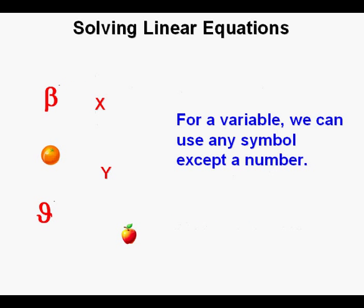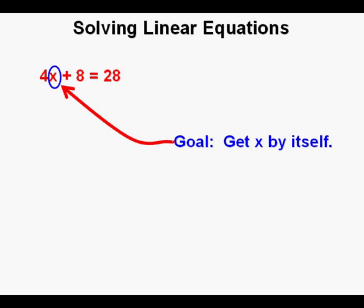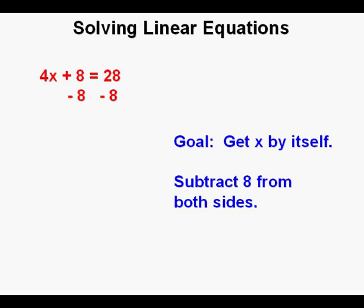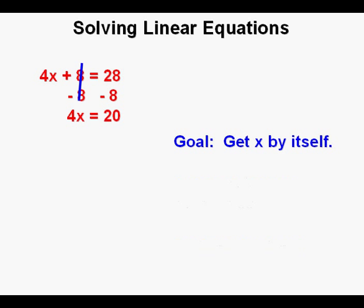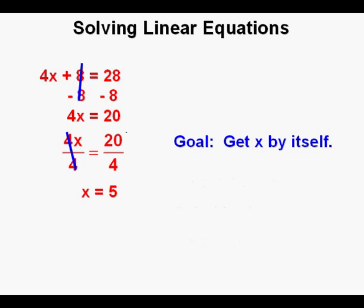We have different kinds of symbols and letters. For a variable, we can use any symbol except a number. Let's solve this equation: 4x plus 8 equals 28. The goal, again, is to get x by itself. We'll start by subtracting 8 from both sides of the equation. 8 minus 8 cancel on the left side. We bring down what's left: 4x equals 20. Divide both sides of the equation by 4. 4 over 4 cancel on the left side. We bring down what's left, and that's x equals 5.